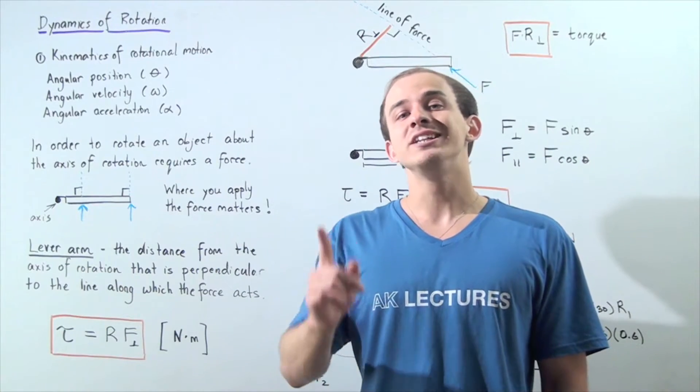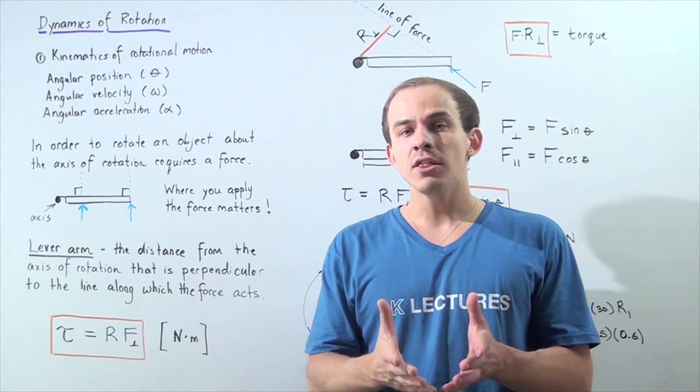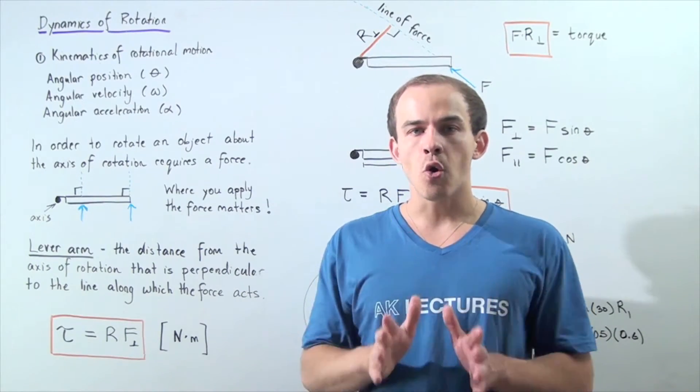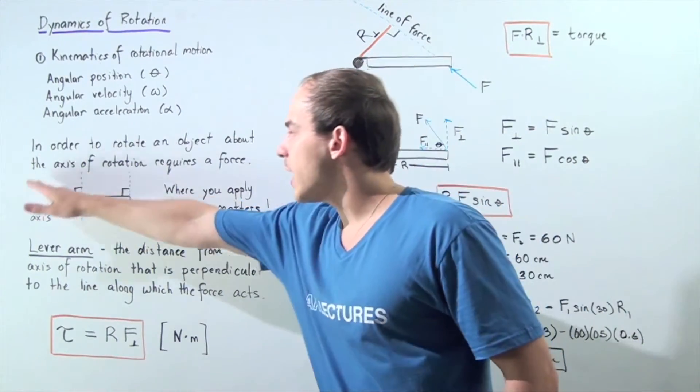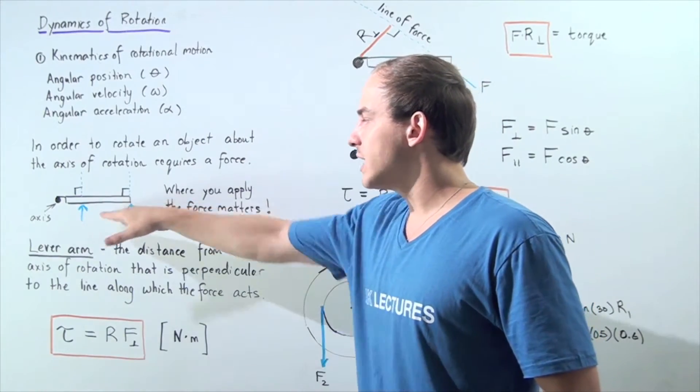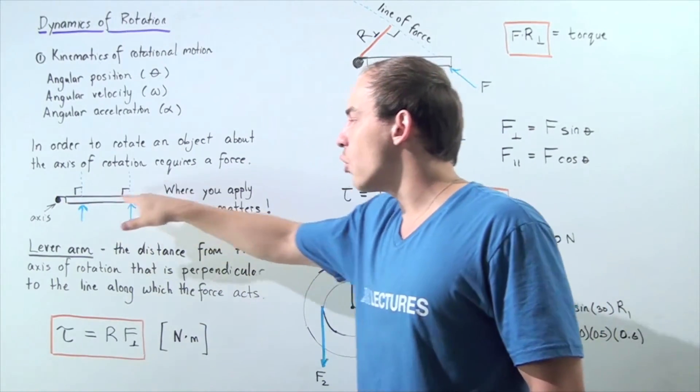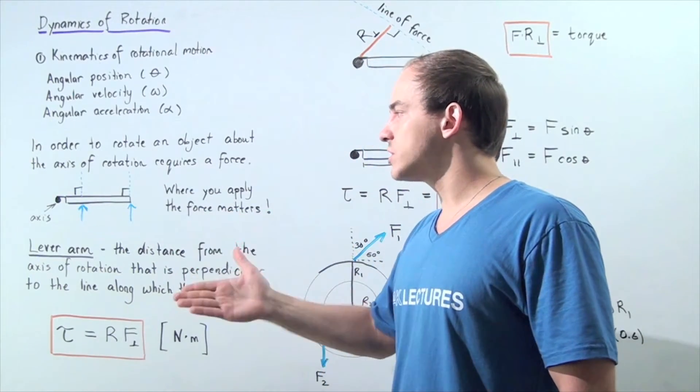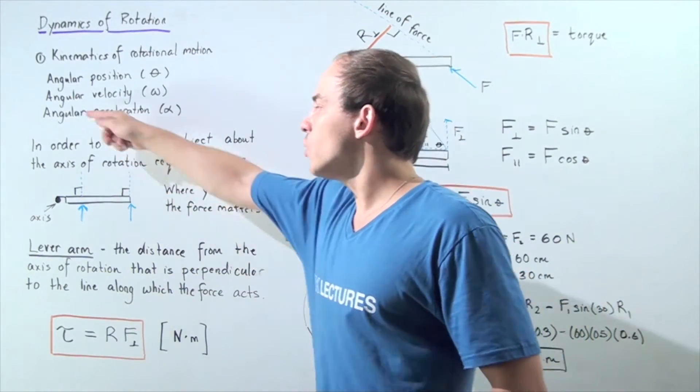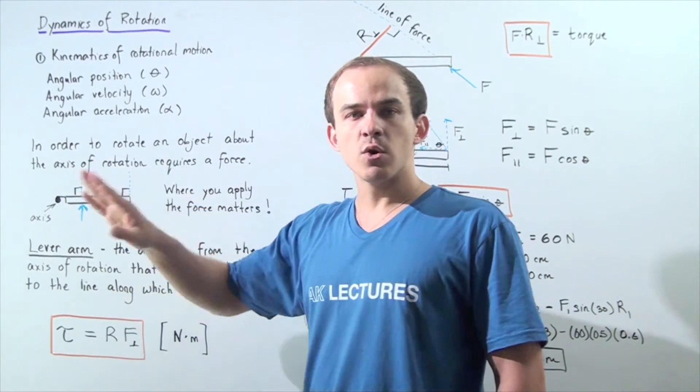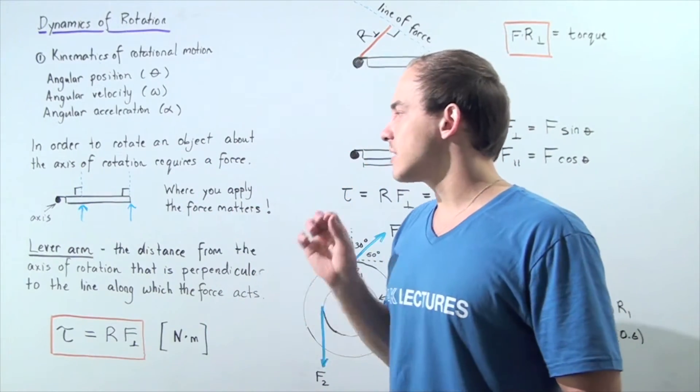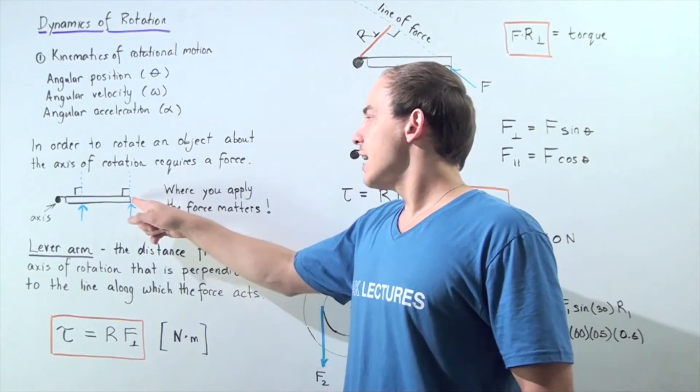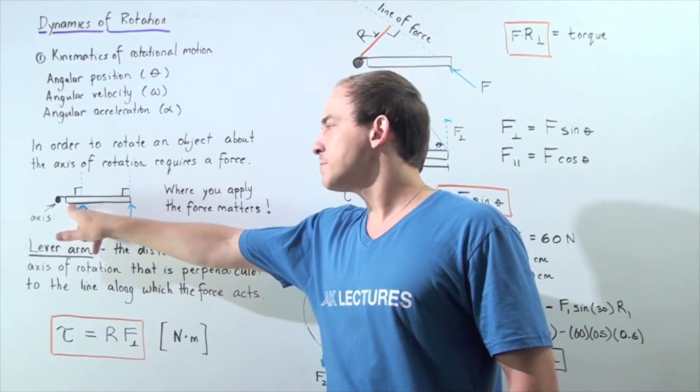There's something else called the lever arm. And together, the lever arm and the net force create something known as the torque. So let's look at the following example. Let's suppose we have a door and the door is attached to a hinge. When you open or close the door, the door rotates about the hinge. So the hinge acts as our axis of rotation. Now, let's suppose I apply force at this position and at this position.